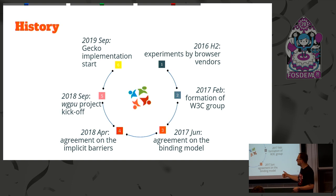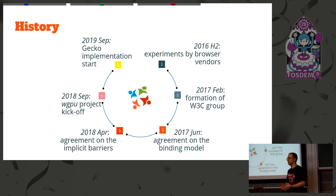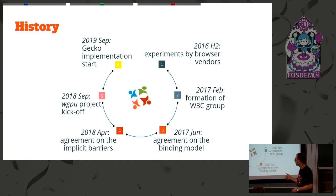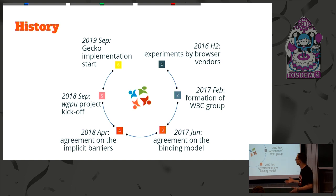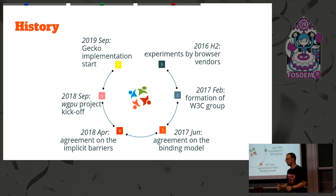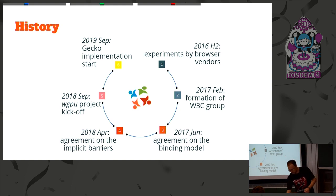In 2018, we agreed on implicit barriers, which is important for setting the direction of how simple the API is going to be to use — because Vulkan and D3D12 require you to explicitly transition your resources between states and synchronize between pipeline stages. Also in 2018, we started a Rust project called WGPU which implements WebGPU for native platforms. And in 2019, we started integrating it into Gecko — the engine for Firefox — as the basis for the WebGPU implementation.